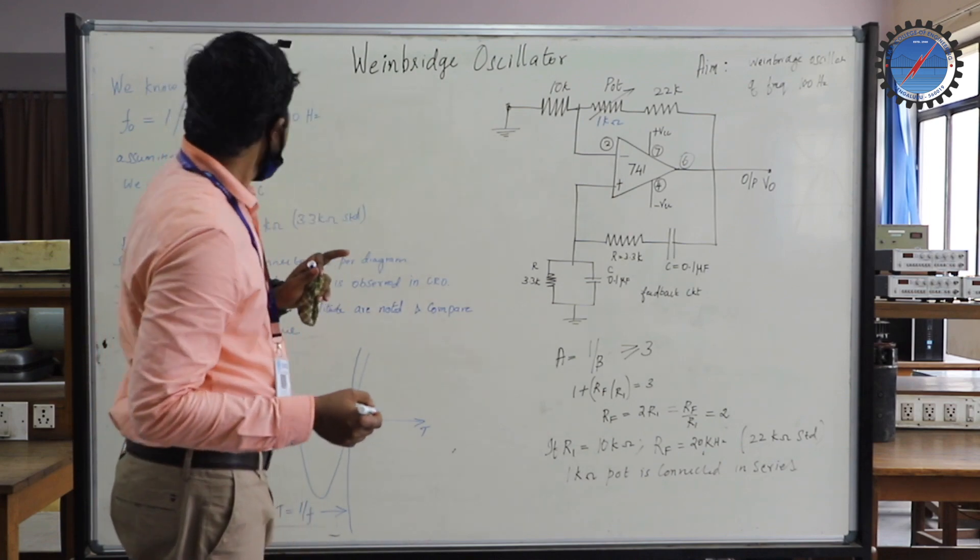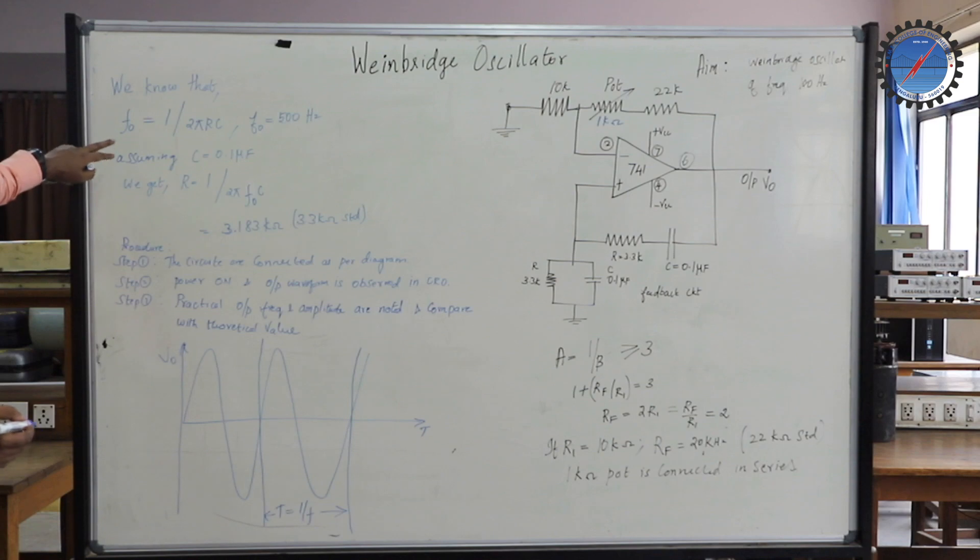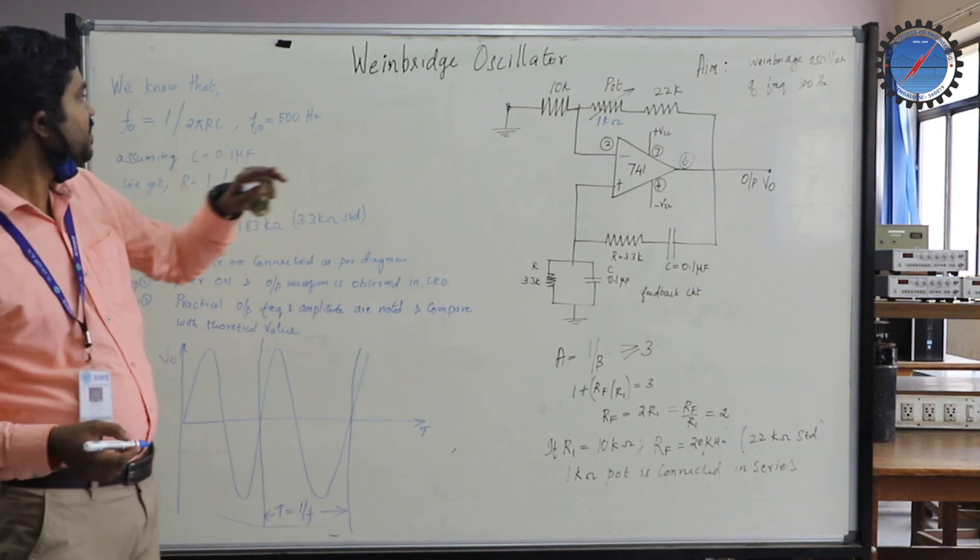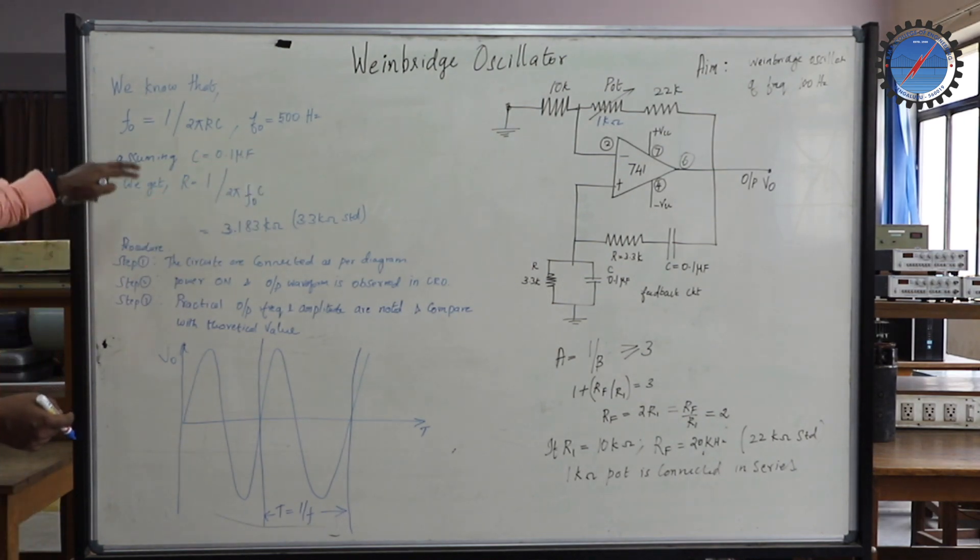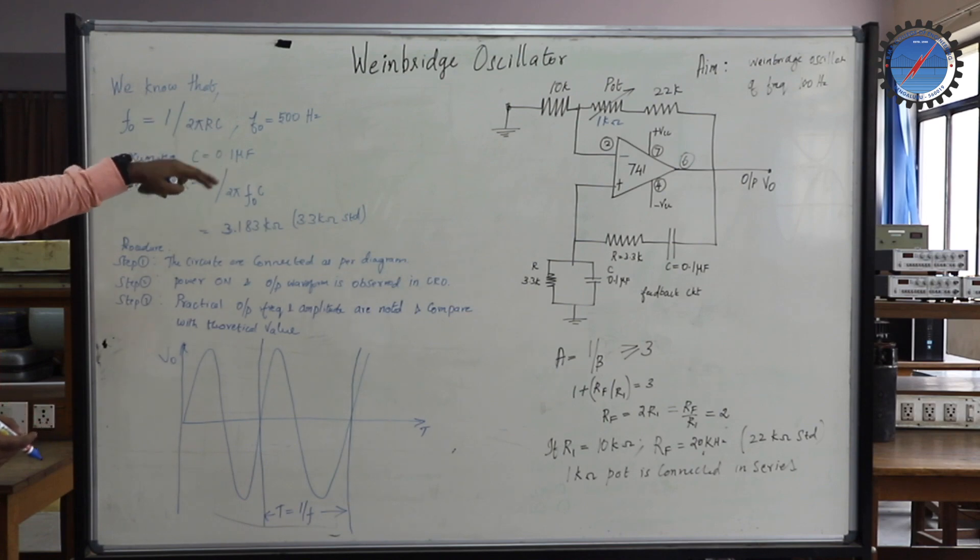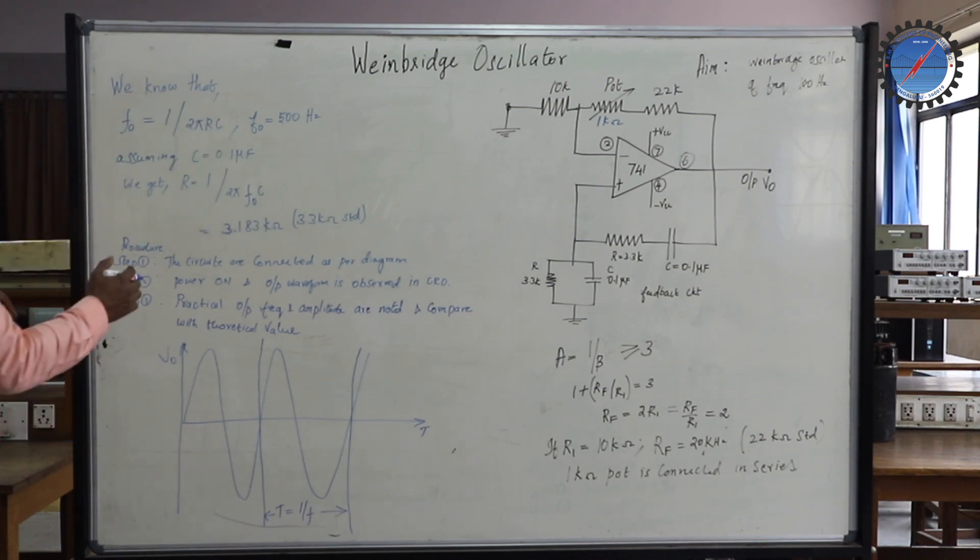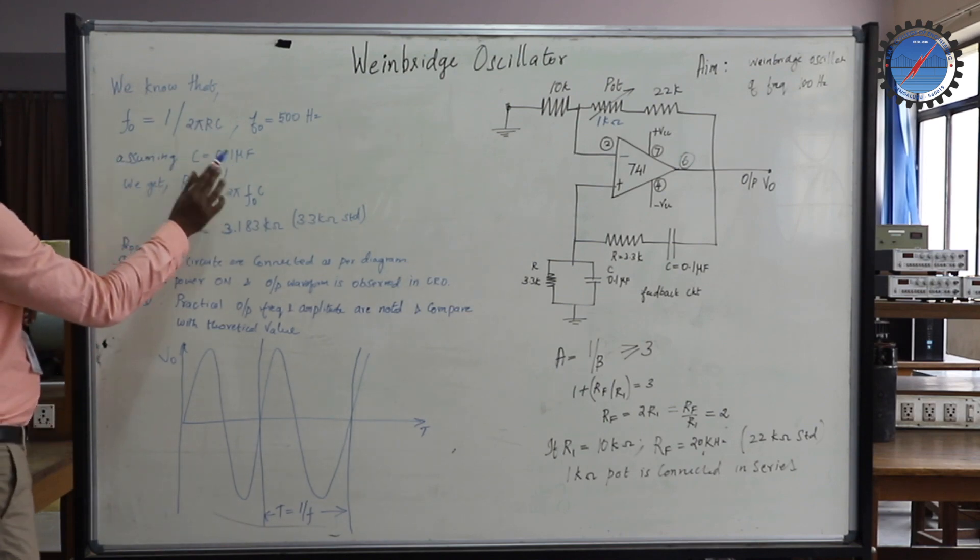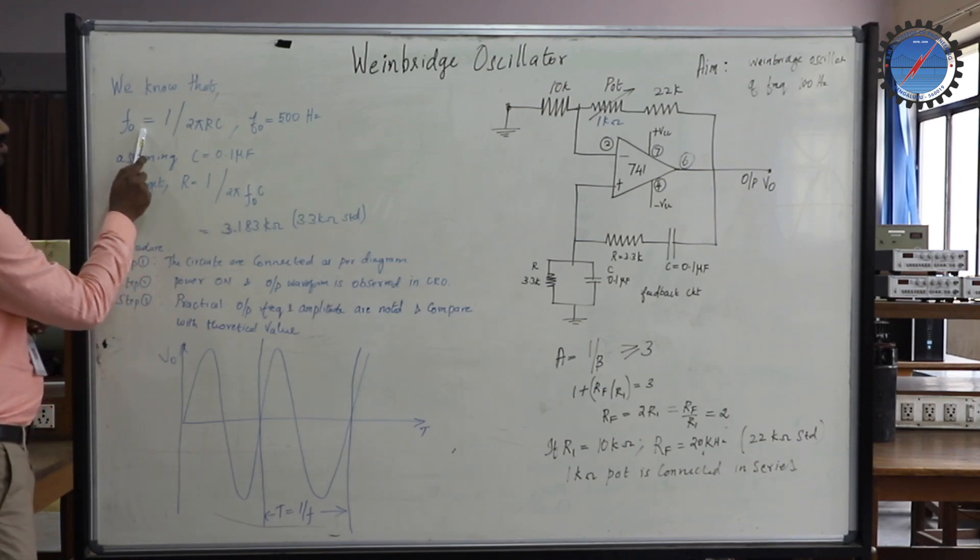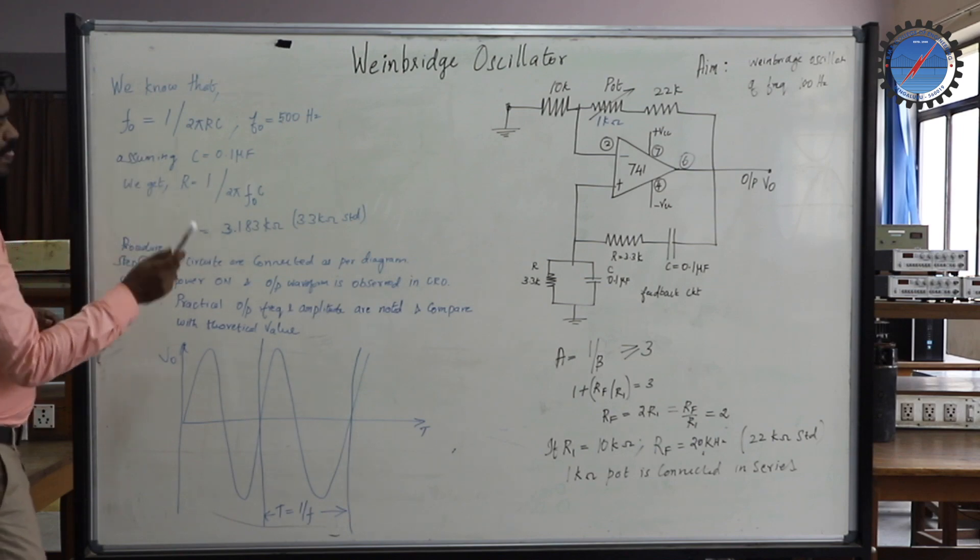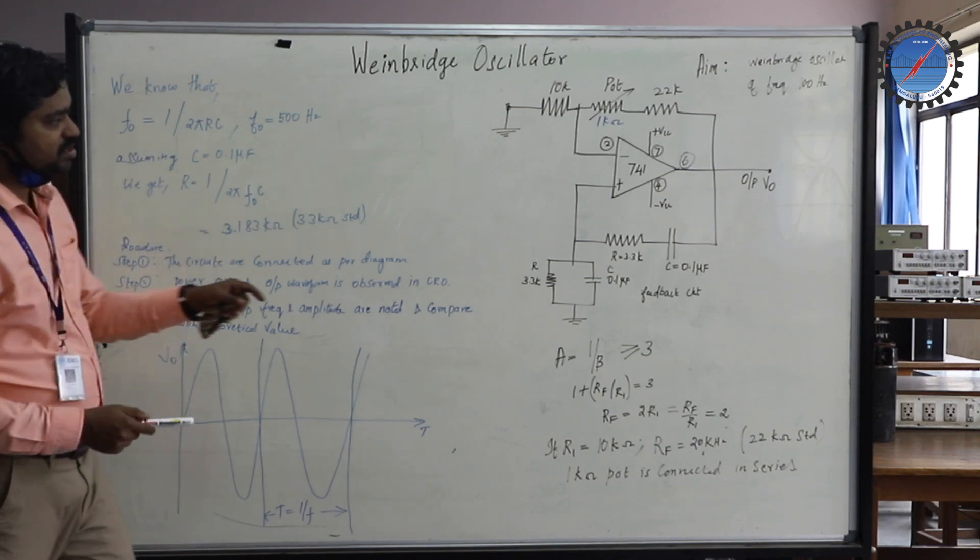For frequency F0 equal to 100 Hz, we know that F0 equals 1 divided by 2πRC. Assuming C is 0.1 microfarad, we get R equal to 1 divided by 2πF0C. So R is 3.183 KHz.